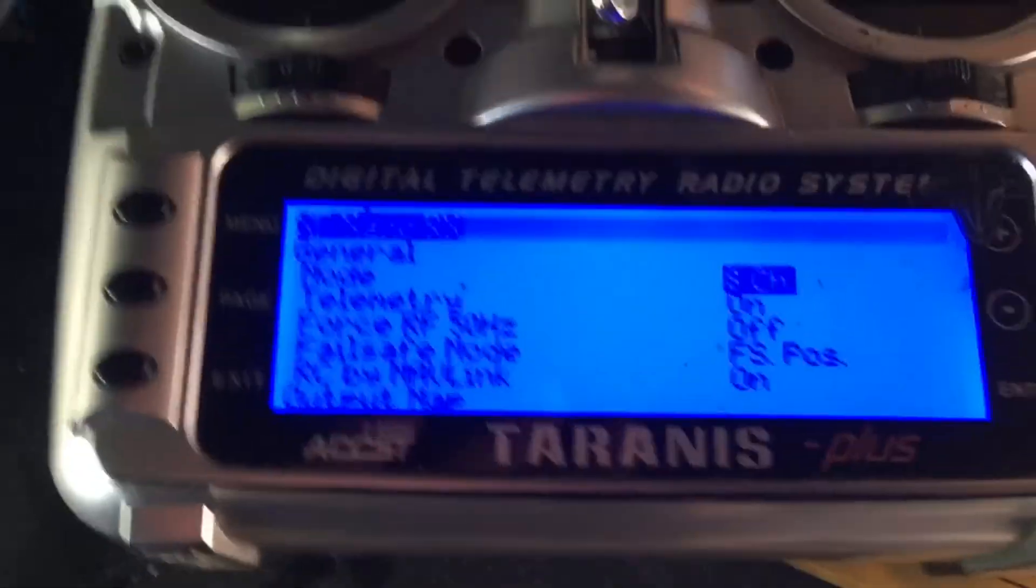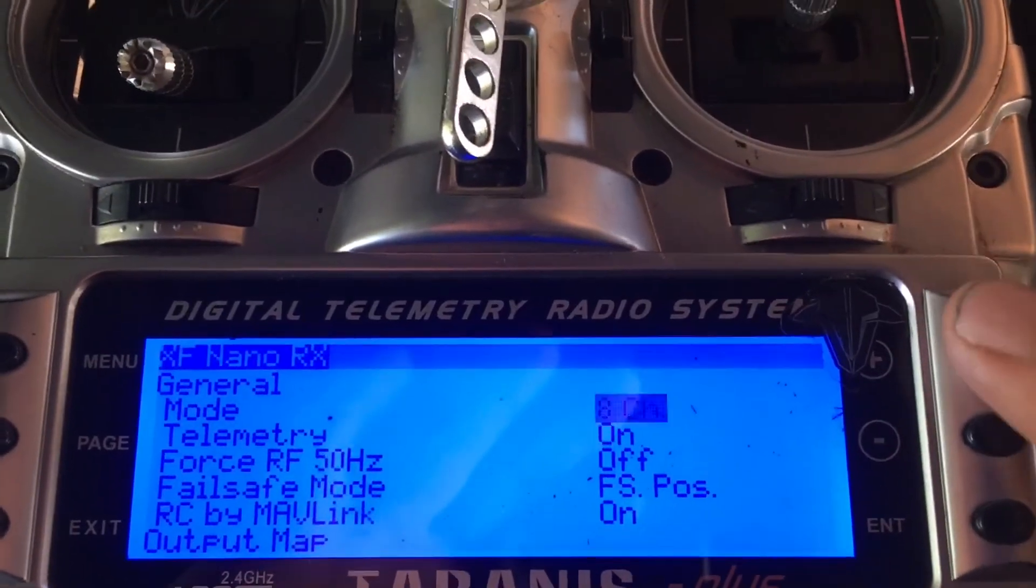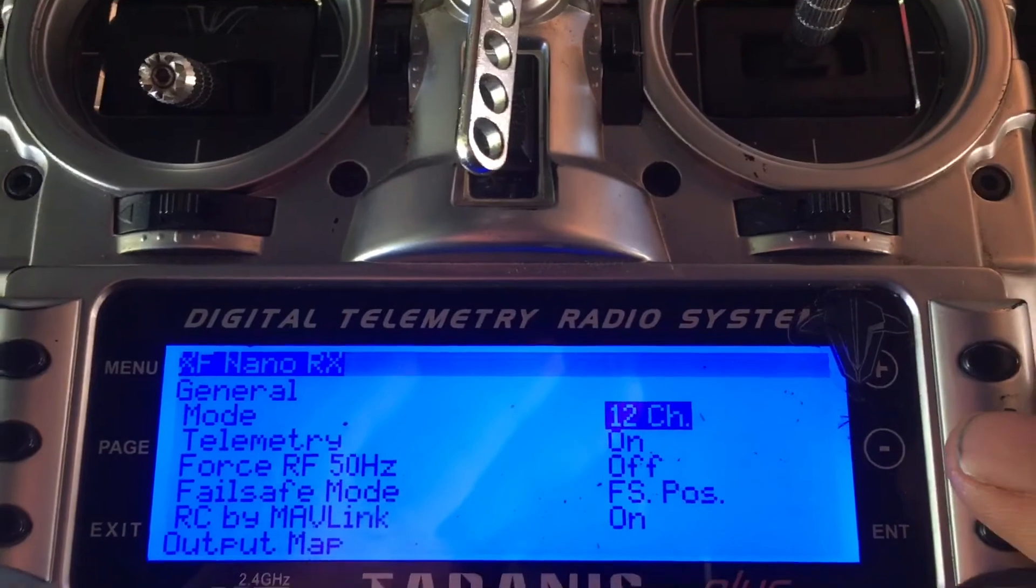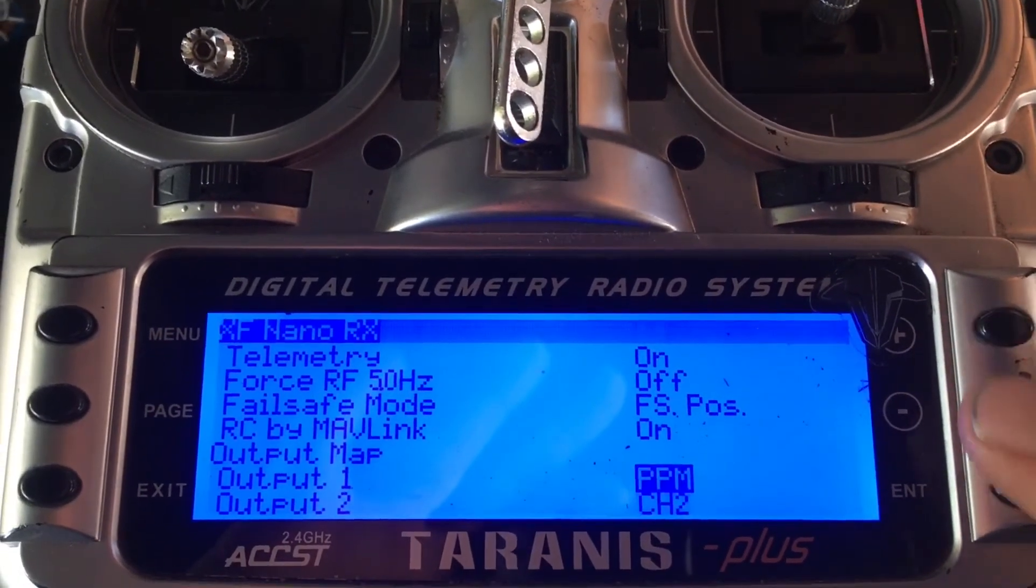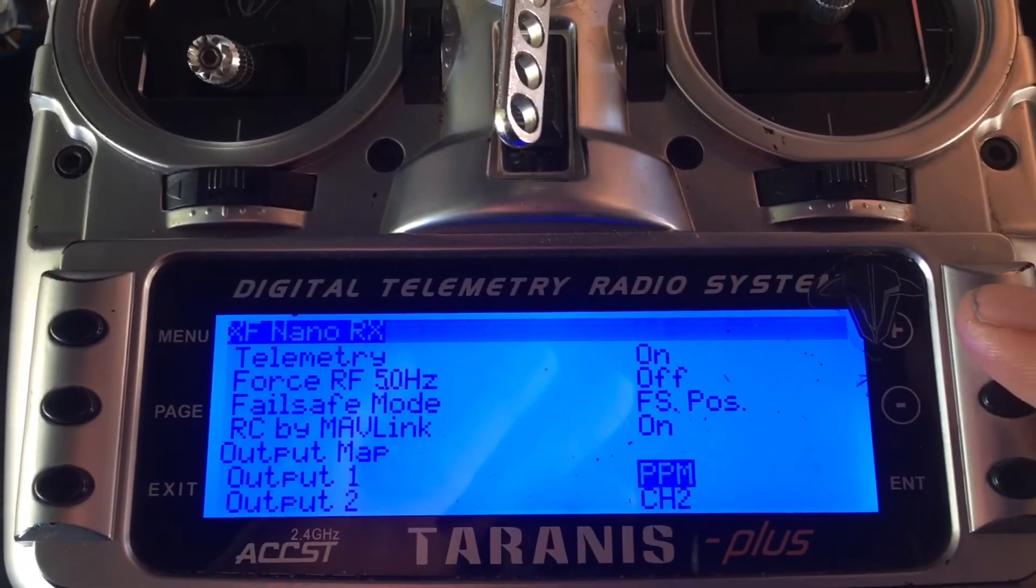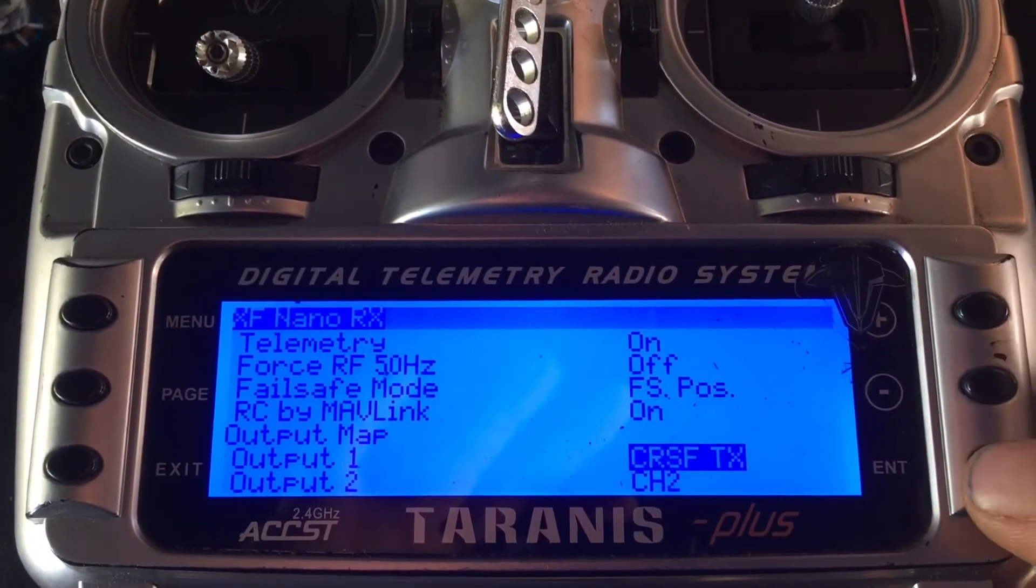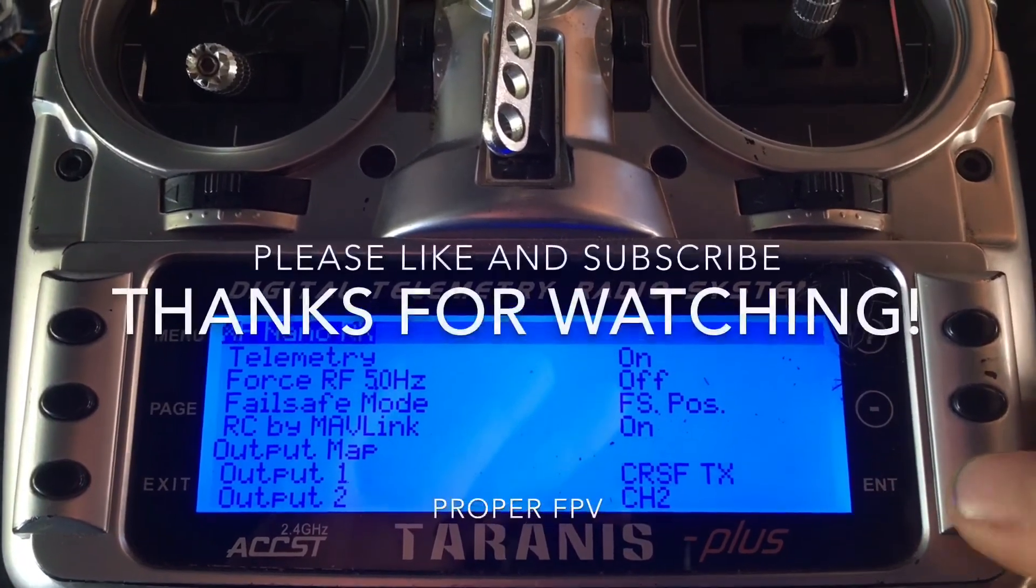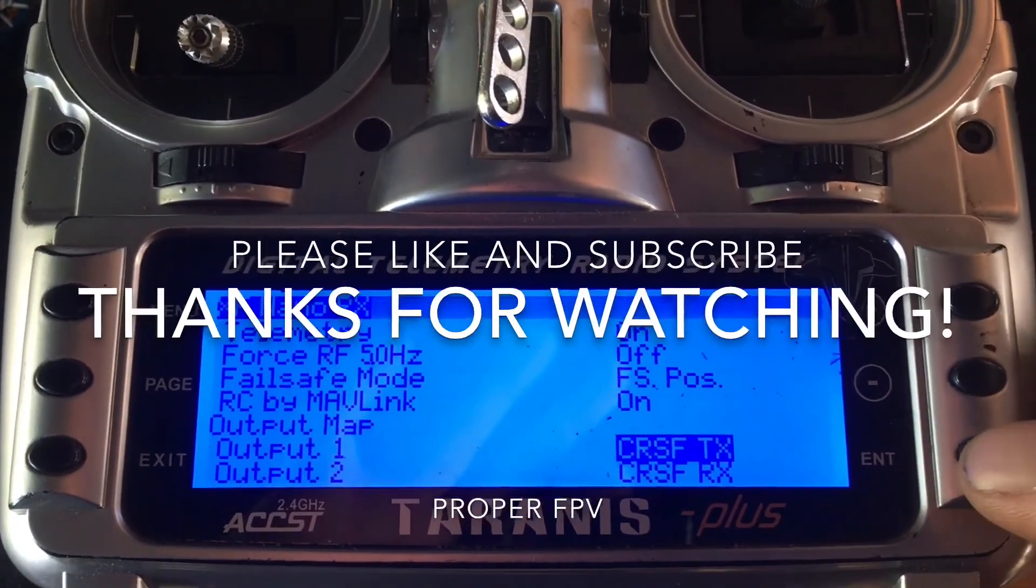So I'm going to press enter, go 12 channel. We're going to go crossfire and then it automatically populates that.